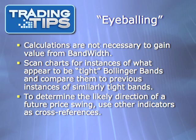Compare them to previous instances of similarly tight bands for that same stock. Then look at what the stock did in the previous instances. Was there a major price swing following the tightening? Remember, don't worry about which direction the stock spiked, only that it did or didn't spike. For direction, you'll need to use other indicators. The value of Bollinger Band Width is to simply predict a major move.